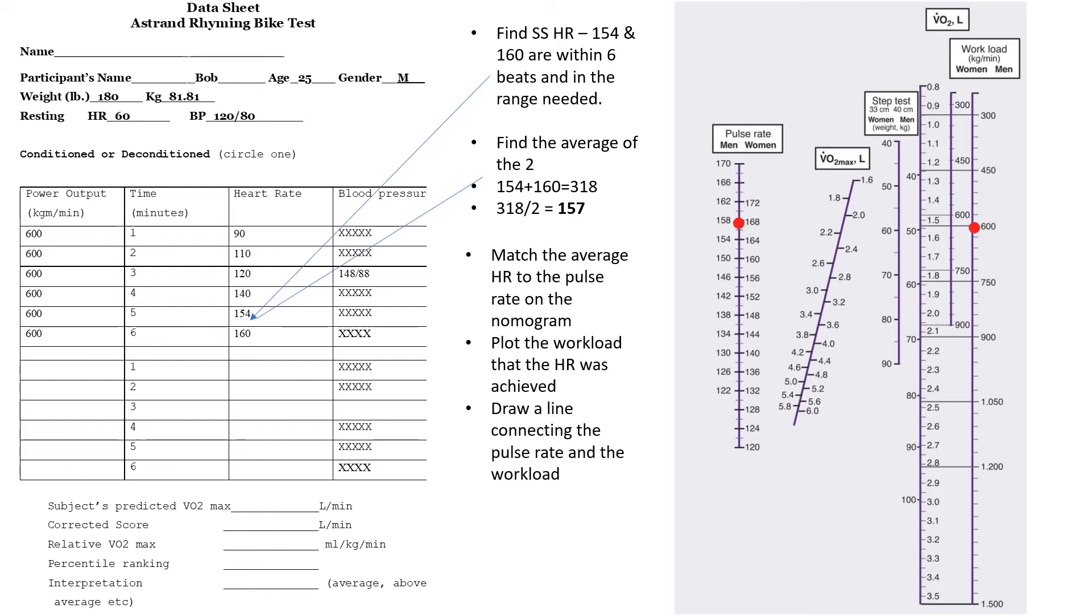Then the next step is to draw a line connecting the pulse rate and the workload. So you would draw a straight line across there, and then you want to plot where that line lands on this VO2 max column here. And this is VO2 max in liters per minute, keep that in mind. So it's going to fall right about there,